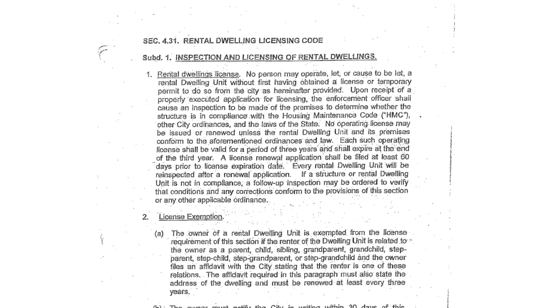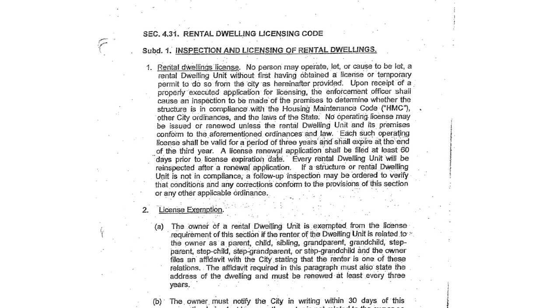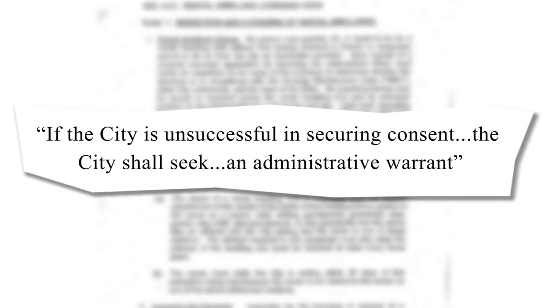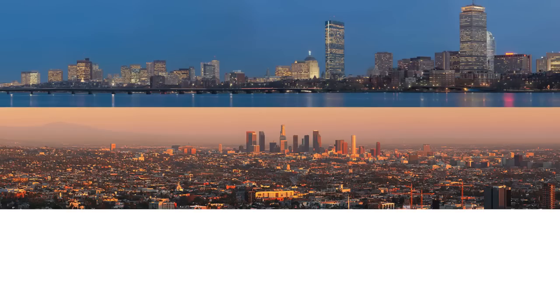In 2005, Red Wing Minnesota passed a Rental Home Inspection Ordinance that gave it the power to inspect homes without any specific probable cause that there are any housing code violations in those homes. These kinds of laws exist across Minnesota and across the United States in cities like Boston, Los Angeles, and Milwaukee.